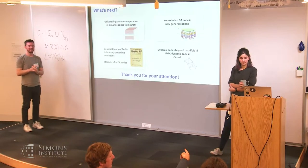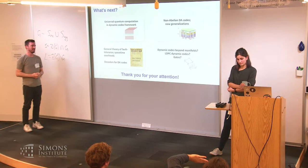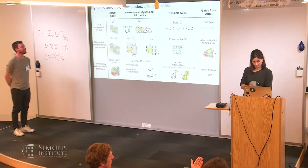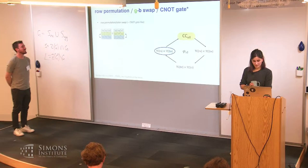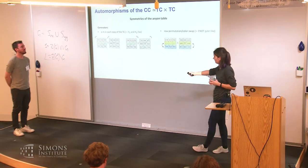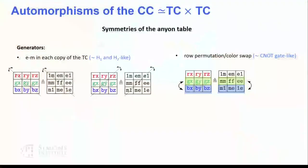Q: Could you explain again why you chose to generate all of your automorphisms as two different transposes and one row permutation? A: This automorphism is an EM automorphism in the first layer, this one is an EM automorphism in the second layer — so you just get them for free from the decoupled layers. The third generator is the new one that exchanges colors between layers.